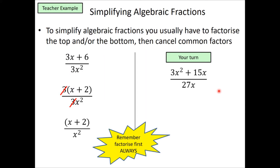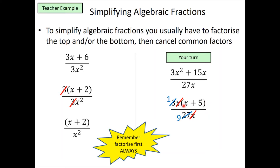For this question, factorize 3x² + 15x: both x and 3 are common, so 3x is the common factor for the numerator. Take 3x outside the bracket to get 3x(x + 5). The 27x stays on the denominator. Now cancel the common terms: cancel the x's and then the 3 with the 27 — 3 divided by 27 is 1/9 — leaving 1 × (x + 5) / 9. So (x + 5) / 9 is the final answer.